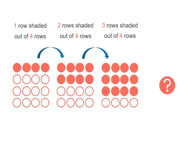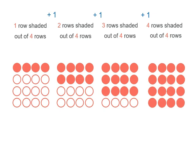So what would come next? Well, since we've increased by 1 each time, we went from 1 to 2, then 2 to 3. 3 plus 1 means 4 rows are shaded out of our 4 rows. So that's what it would look like.